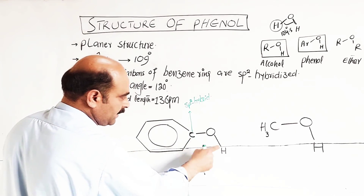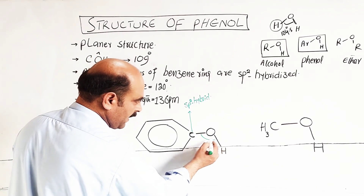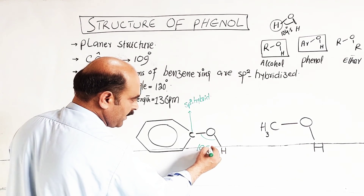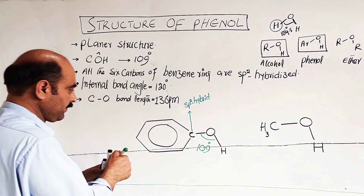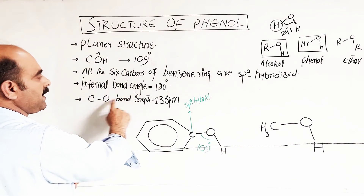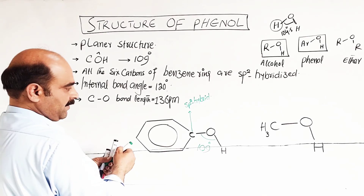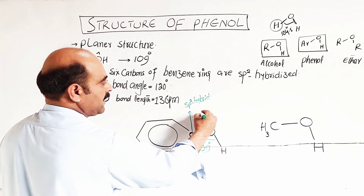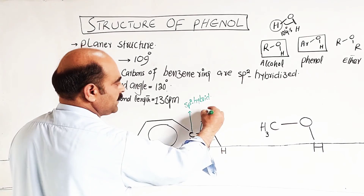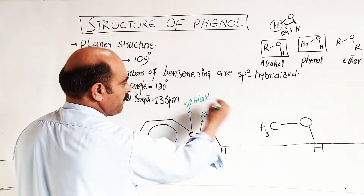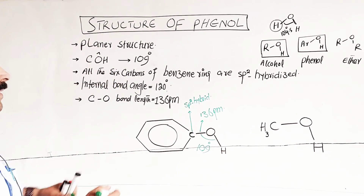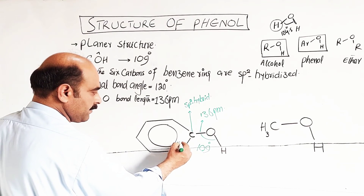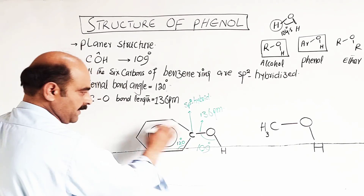The carbon-oxygen-hydrogen bond angle is 109 degrees. The carbon-oxygen bond length is 136 picometers. The internal angle of the benzene ring is 120 degrees.